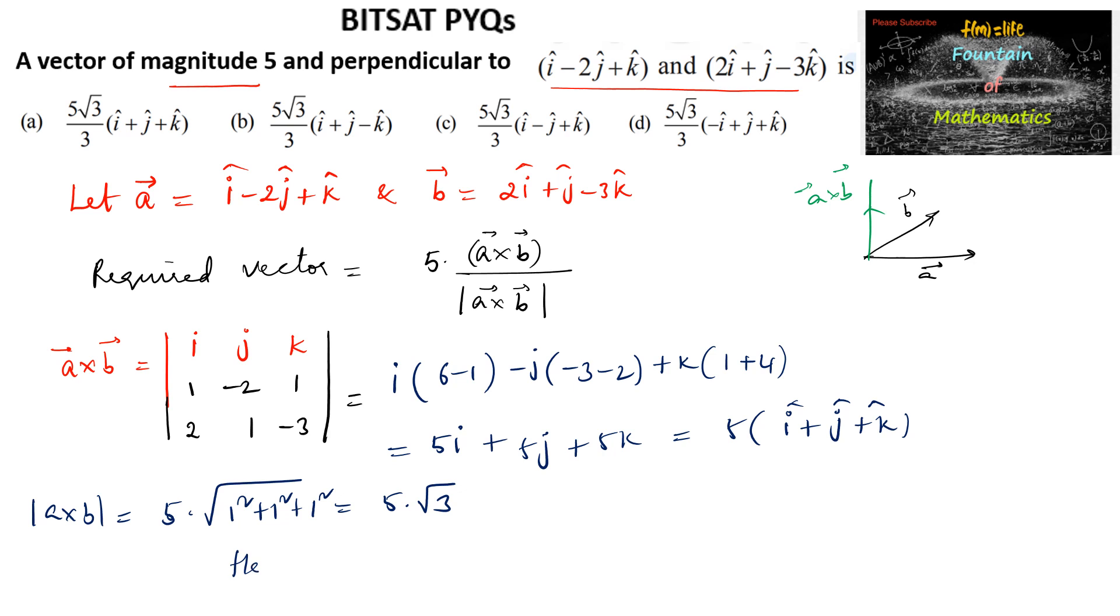Hence, the required vector is equal to - we can consider even plus or minus - 5 times a cross b.